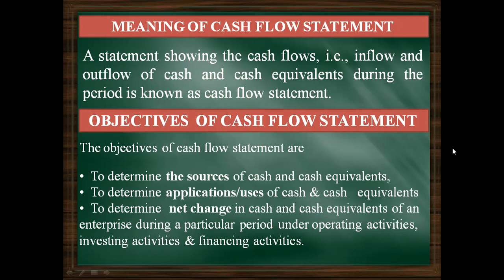The objectives of preparing the Cash Flow Statement are: first, to find out sources of cash and cash equivalents — from where a business receives cash; second, to determine the applications and uses of cash and cash equivalents — where the cash has been utilized, that is, outflow of cash; and third, to determine the net changes in cash and cash equivalents during the accounting year from all three activities — the difference between what is received and what is paid.